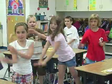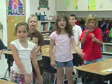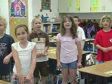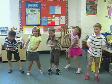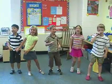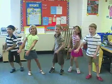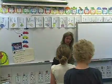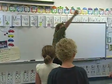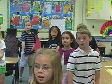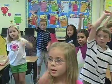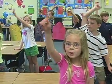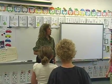We're sliding down to the end of the alphabet, sliding down to the end of the alphabet, sliding down to the end of the alphabet, sliding down the letter V. V slides down, V slides up, V slides down, V slides up, V slides down, V slides up. That makes letter V.